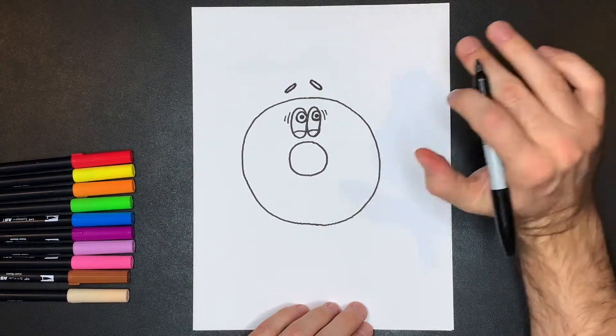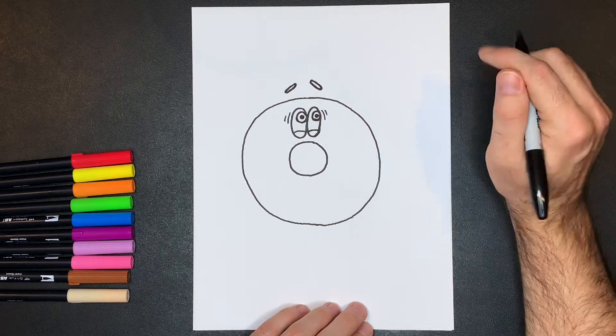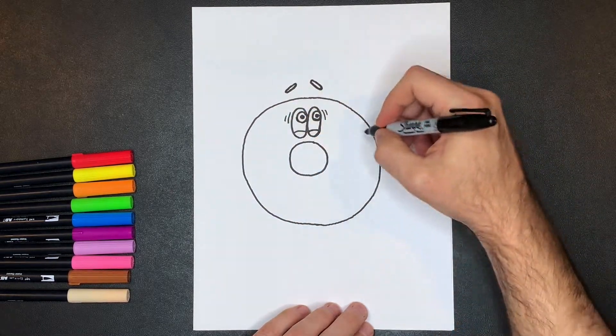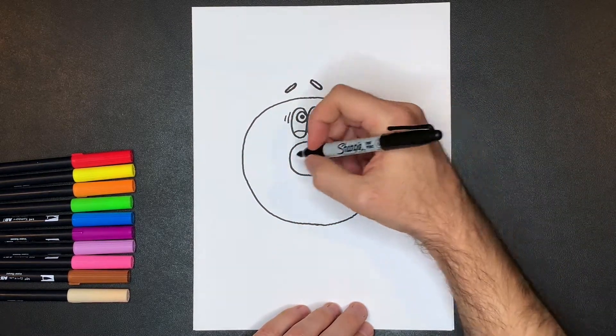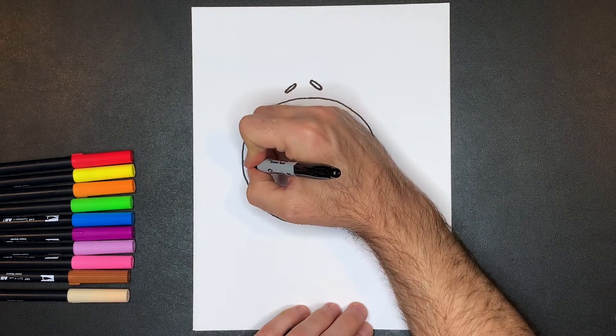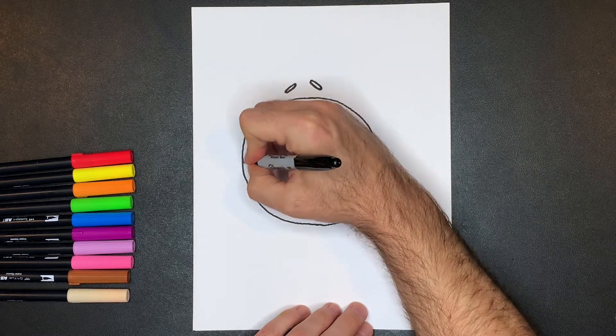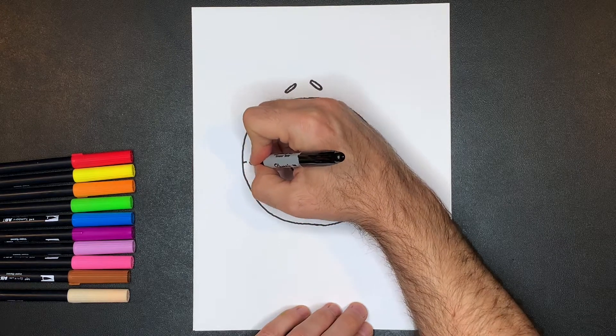Next we're going to do my favorite part of any donut, the glaze. So it's just going to be some kind of organic wavy lines, and I'll show you what that looks like. So we're going to start here, and I'm going to connect it to the side here, because maybe there's some dripping all over the side.